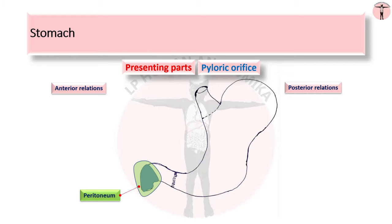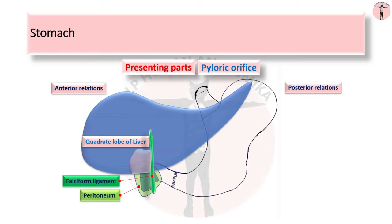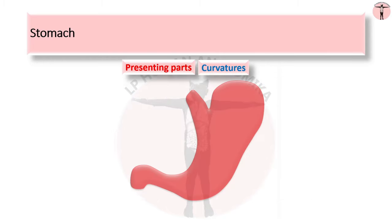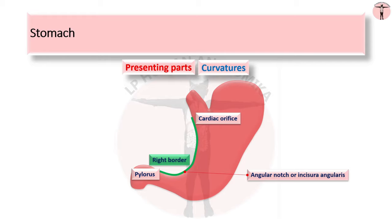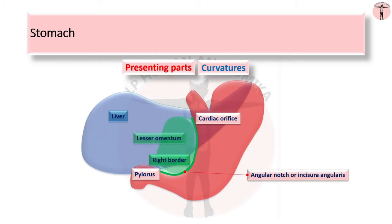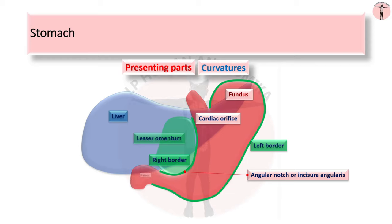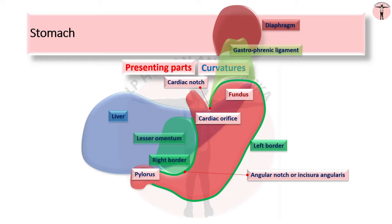The pylorus is anteriorly covered with peritoneum, the quadrate lobe of liver, and falciform ligament of liver, and posteriorly related to the neck of the pancreas separated by the lesser sac. The lesser curvature forms the right border of the stomach, extending from the cardiac orifice to the pylorus. The most dependent part of the curvature is marked by a depression called the angular notch or incisura angularis. It is suspended from the liver by the lesser omentum. The greater curvature, which is much longer, forms the left border of the stomach, extending from the left cardiac orifice over the dome of the fundus to the pylorus. At the upper end, it presents an angle between the esophagus and greater curvature called the cardiac notch.